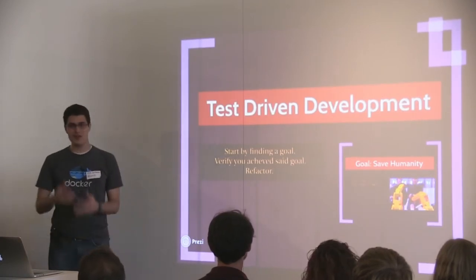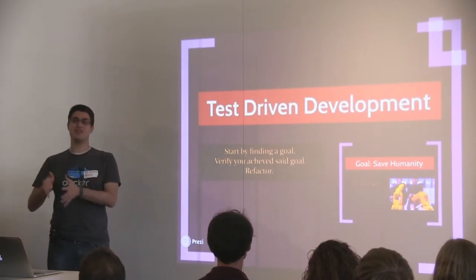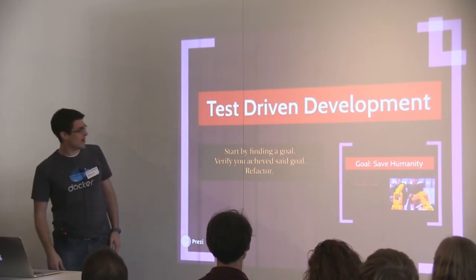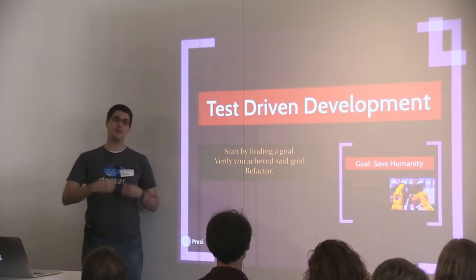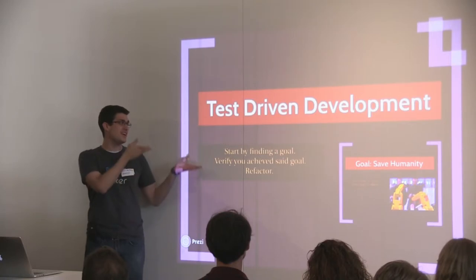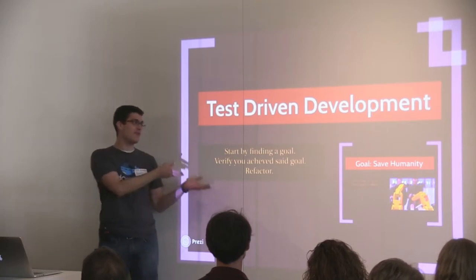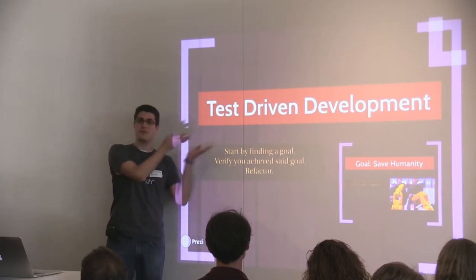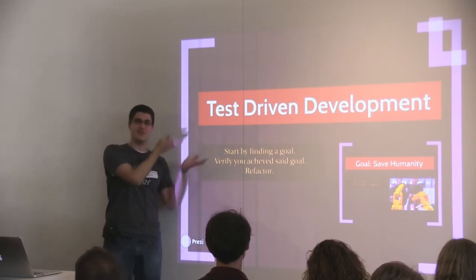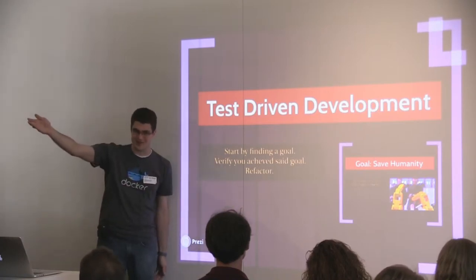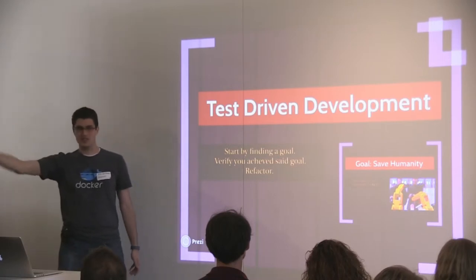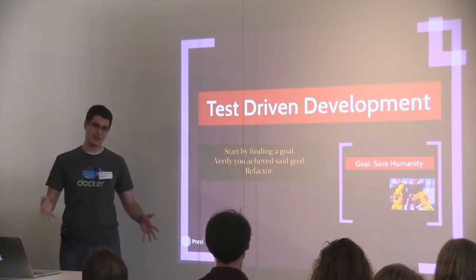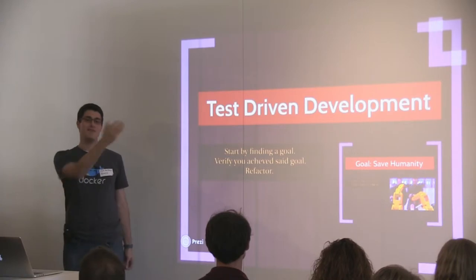Test-driven development — how can we apply it to our lives? In test-driven development, you start off by finding a goal, then verify you achieved that goal, then refactor, and repeat. Live your life this way: go set yourself a goal, get to your goal, check to make sure you've reached it, refactor if things should be a little different, and then find another goal.